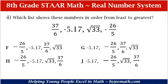This is problem number 4 in the 8th grade math review workbook. Which list shows these numbers in order from least to greatest? The numbers are negative 5.17, the square root of 33, and negative 26 over 5. Answer choice F: negative 26 over 5, negative 5.17, 37 over 6, and the square root of 33. Answer choice G: negative 5.17, negative 26 over 5, 37 over 6, the square root of 33. Answer choice H: negative 26 over 5, negative 5.17, the square root of 33, 37 over 6.